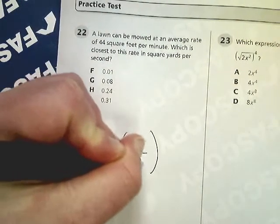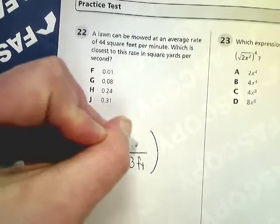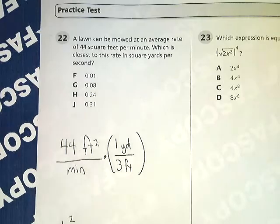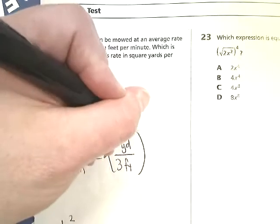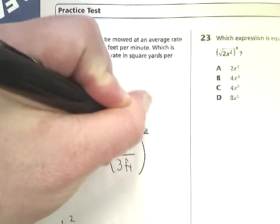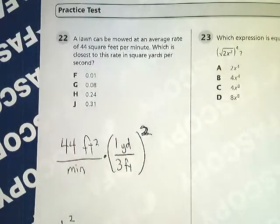Three feet for every one yard. That's the relationship of just the single one-dimensional measurement. But what happens if I square it? I just need to square that entire term.